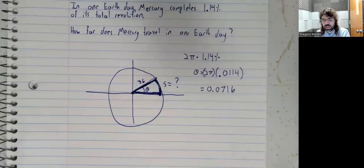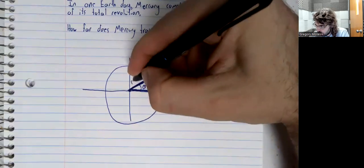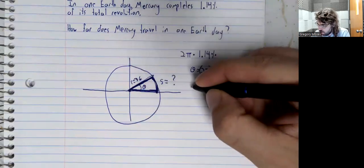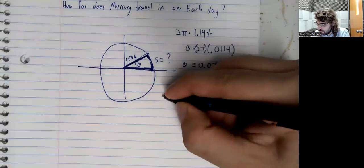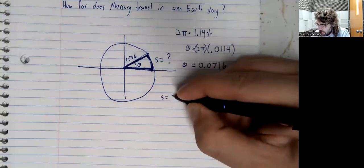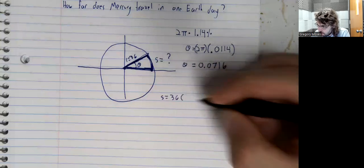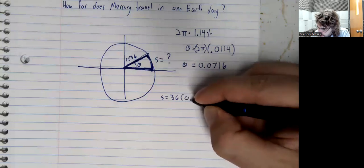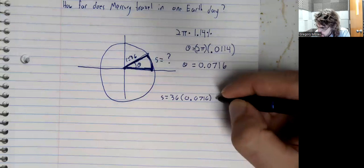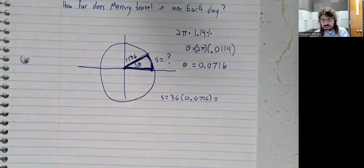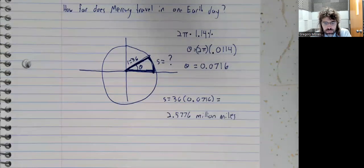And now we know R and we know theta. So S equals R times theta. Let me do this on a calculator really quick. About 2.58 million miles.